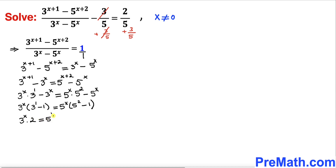Now let's divide both sides by 2. The 2 on the left cancels, giving us 3^x = 5^x · 12.